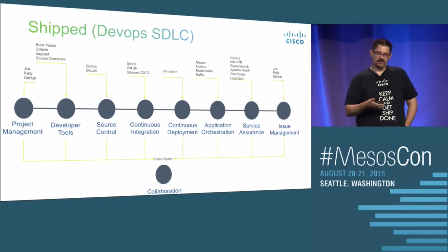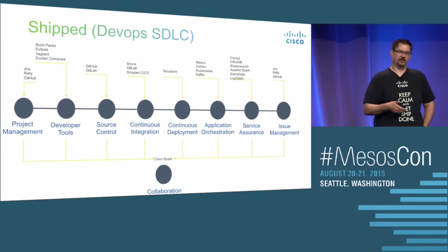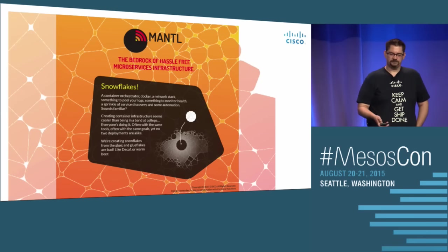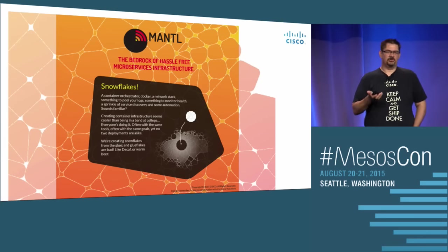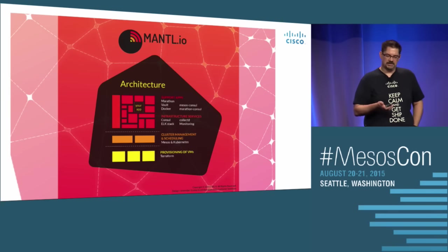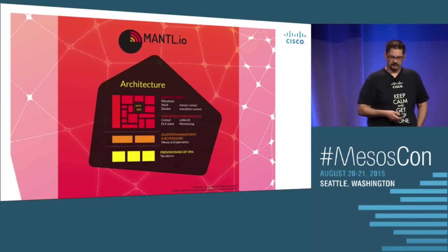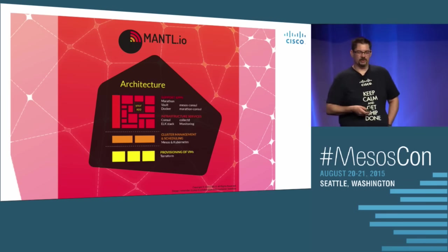We wanted to make sure developers could collaborate with others inside and outside their company, so we've integrated with Cisco Spark, which is our WebEx platform. I'm also excited to announce that we've changed our microservices infrastructure work on GitHub to Project Mantle — a hassle-free way to develop your microservices. It supports multiple frameworks, has a simple architecture welcoming contributions, includes cluster management, and is multi-cloud today, supporting Amazon, Google, DigitalOcean, and OpenStack. Go to Mantle.io to learn more.